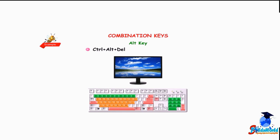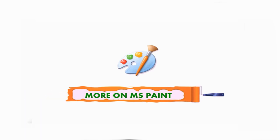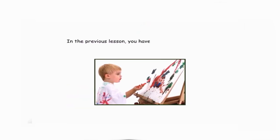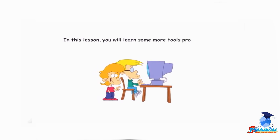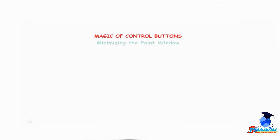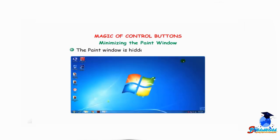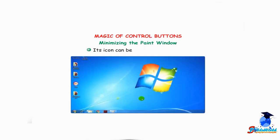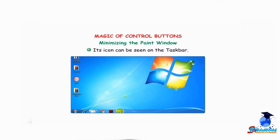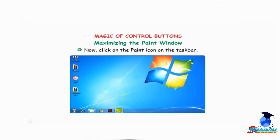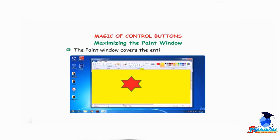Let us learn more about some interesting features of MS Paint. In the previous lesson, you learned to draw and fill color in various shapes. In this lesson, you will learn more tools provided by the paint software. Minimizing the paint window — click on the Minimize button. The paint window is hidden from the main screen. Its icon can be seen on the taskbar. Maximizing the paint window — click on the Paint icon on the taskbar and the paint window covers the entire desktop screen.